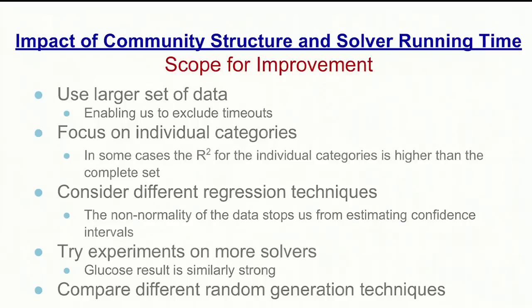We're looking at different regression techniques because the non-normality of the data made it almost impossible to estimate confidence intervals. We're going to use more solvers as well — we've looked at glucose, MiniSAT, and MiniPure, which all have very similar results, but these stem from the same code base. We'll look next at Lingeling and possibly other parallel SAT solvers. We also want to compare different random generation techniques to ensure validity.